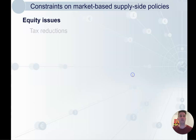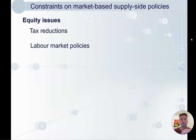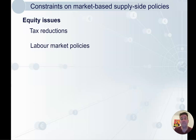Some constraints: tax reductions aren't always equal across the board. For example, the original Liberal policy on the July 2024 tax cuts would have mostly benefited higher income earners, raising an equity issue. Labor changed that so it was more evenly spread across workers. Any labor market policy can affect equity — reducing unemployment benefits, for instance, will obviously affect fairness in the economy.